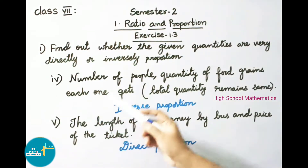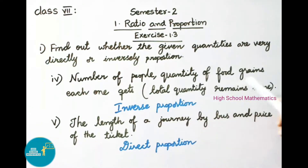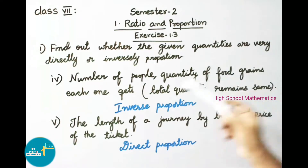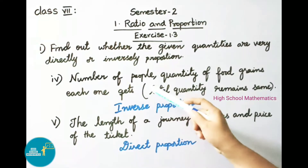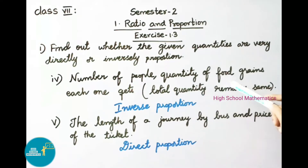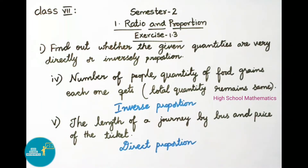Fourth one: number of people and quantity of food grains each one gets. If number of people decreases then quantity of food each one gets will be increased and vice versa. So the given quantities are in inverse proportion.